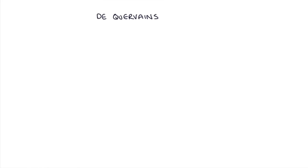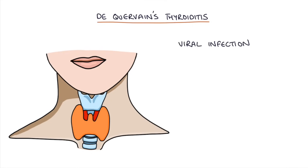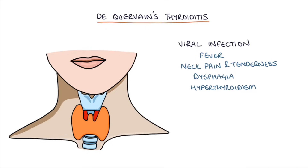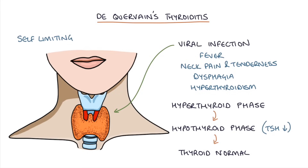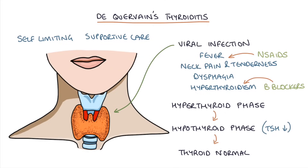De Quervain's thyroiditis describes a presentation of a viral infection with fever, neck pain and tenderness, dysphagia, and features of thyroid dysfunction. A viral infection causes inflammation in the thyroid gland, leading to a hyperthyroid phase followed by a hypothyroid phase as TSH levels fall due to negative feedback. After the hypothyroid phase, thyroid function tests return to normal. This is a self-limiting condition requiring supportive care, usually with NSAIDs like ibuprofen for pain and inflammation, and beta blockers for symptomatic relief if required.